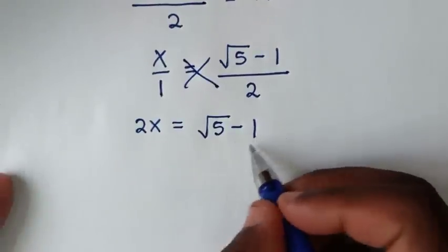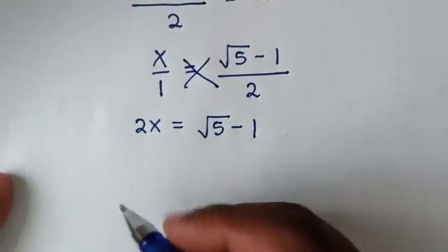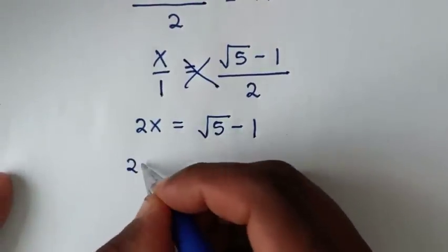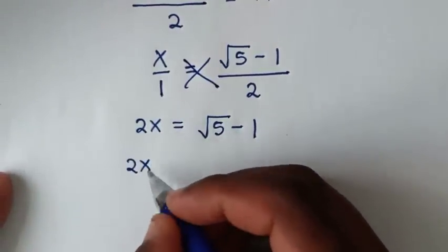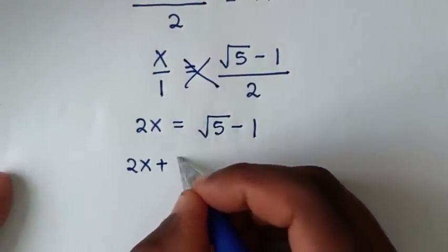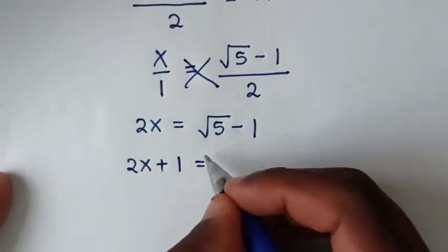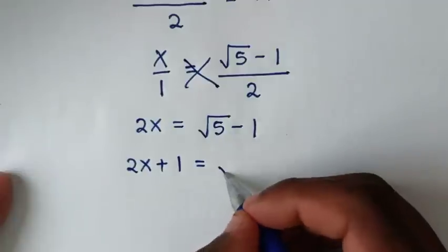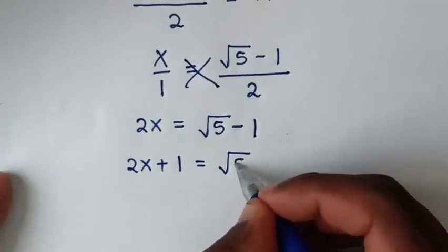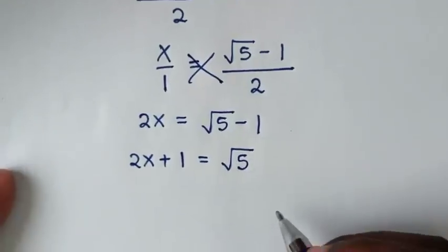We take the negative 1 to the other side, so it becomes 2x plus 1 equals square root of 5.